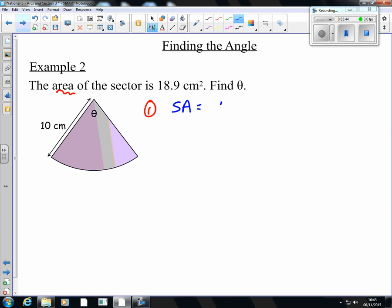So sector area is a fraction, theta over 360, of the area of a circle, which is pi r squared. So there's step one.